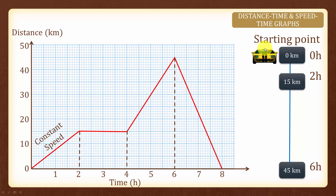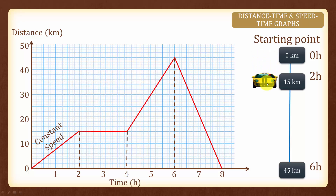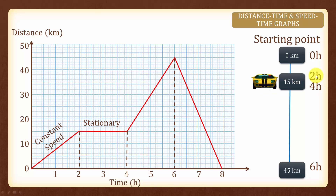For the first 2 hours, the car is travelling at a constant speed until it reaches 15 km. Now, what happened to the car at this point? You notice that the distance does not change. Therefore, the car is stationary, and for the next 2 hours, the car did not move.